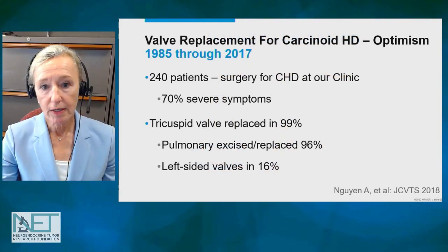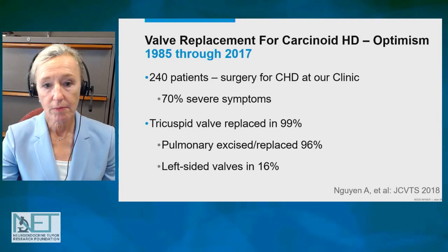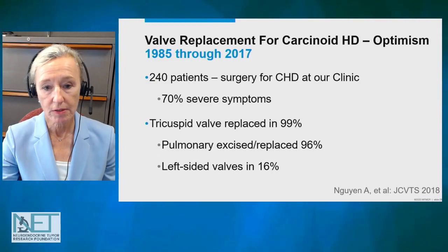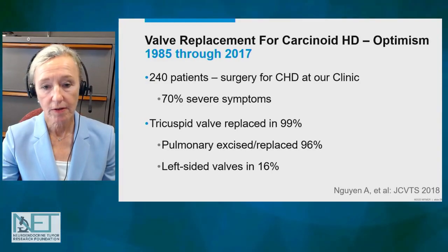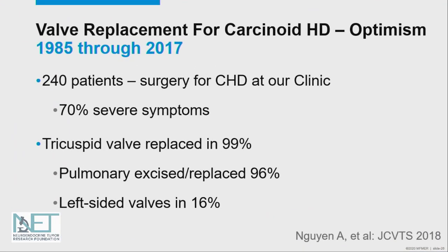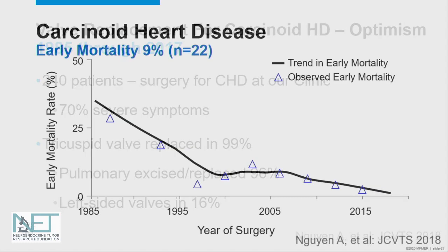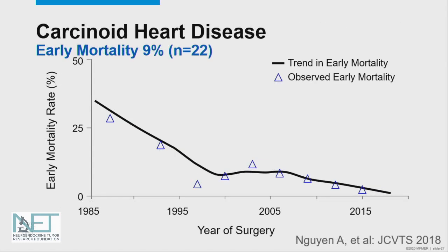I want to share briefly the experience we have here at Mayo Clinic. We've operated on, through 2017, 240 patients who had carcinoid heart disease. 70% had severe symptoms. Essentially all of them had their tricuspid valves replaced. Many had pulmonary valve disease and had intervention for that. Left-sided valve disease was uncommon at 16%.